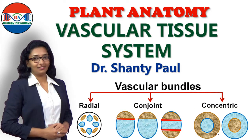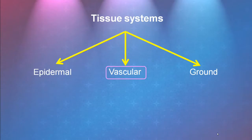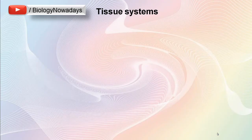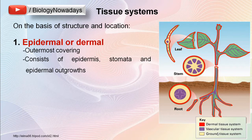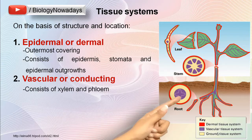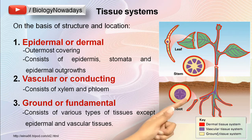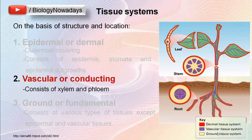Hello everyone, it's me Shanti and you are watching Biology Nowadays. In this video, we will learn about the vascular tissue system. In the previous lecture, we learned what a tissue system is and also about the three tissue systems in plants: namely the epidermal or dermal tissue system, the vascular or conducting tissue system, and the ground or fundamental tissue system. Let's learn more about the vascular tissue system.